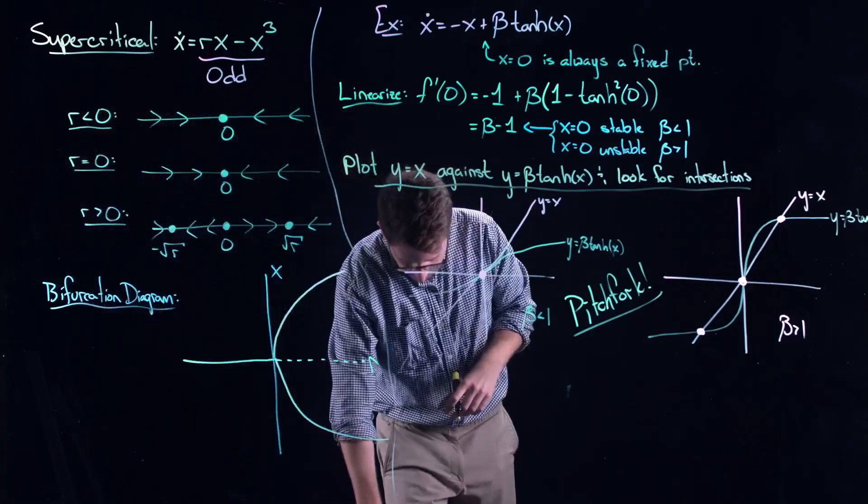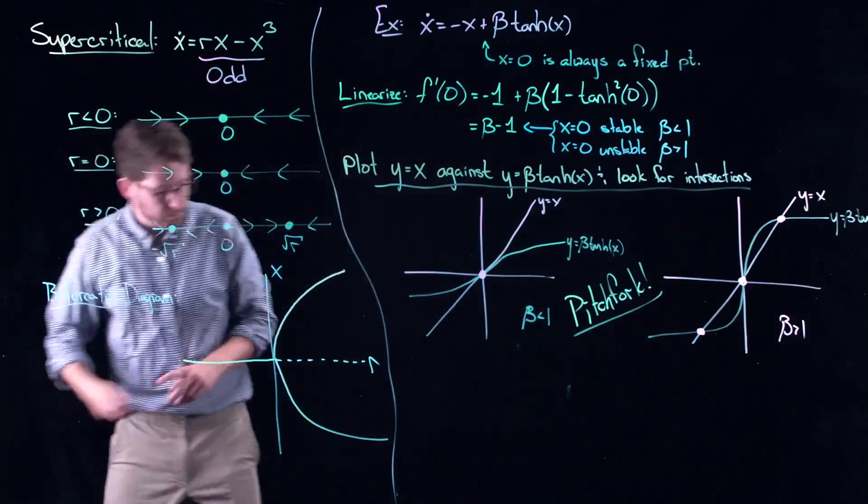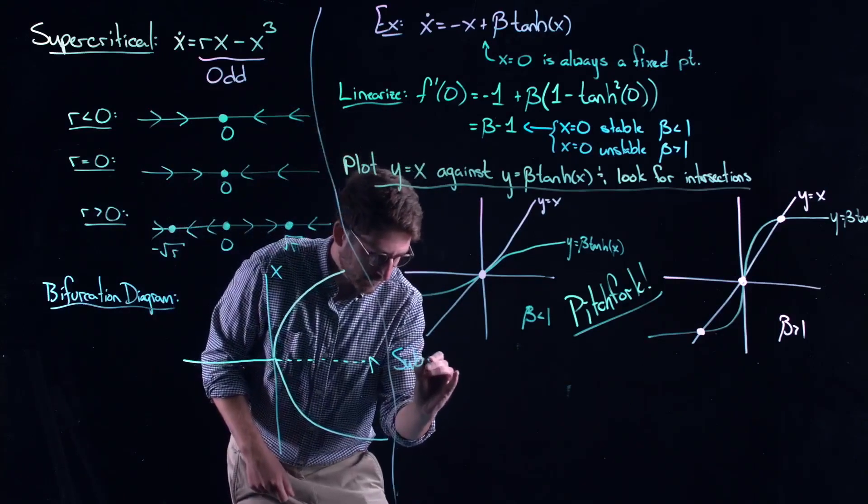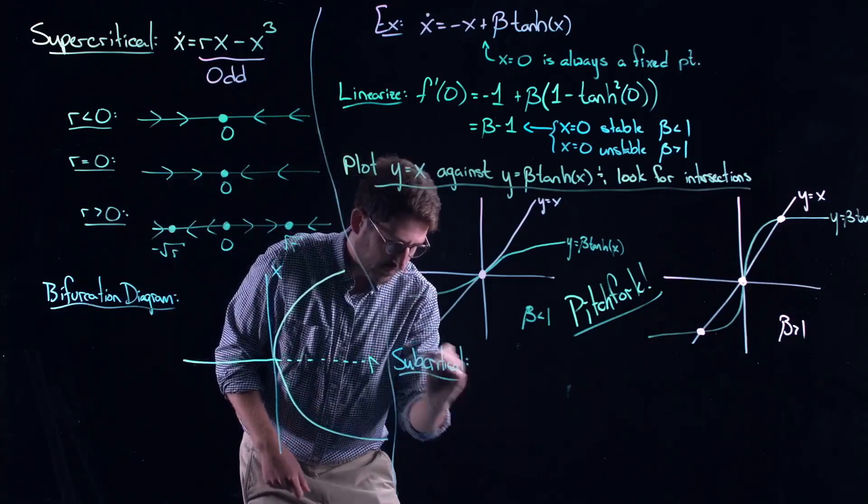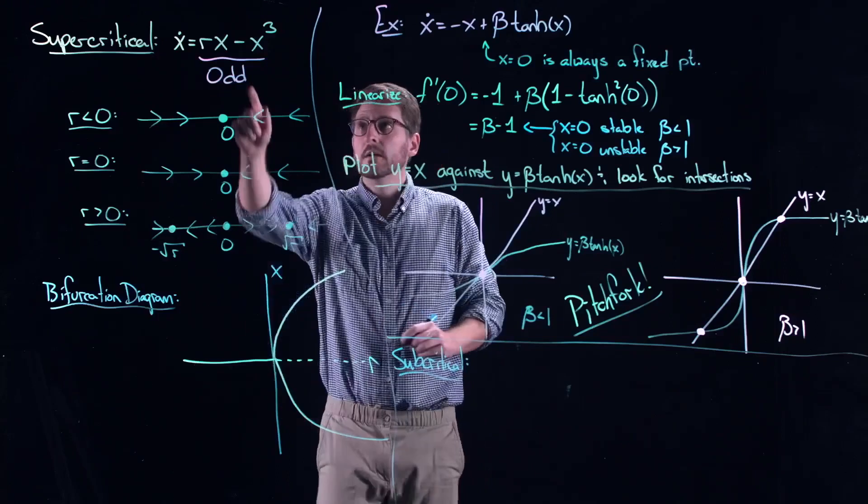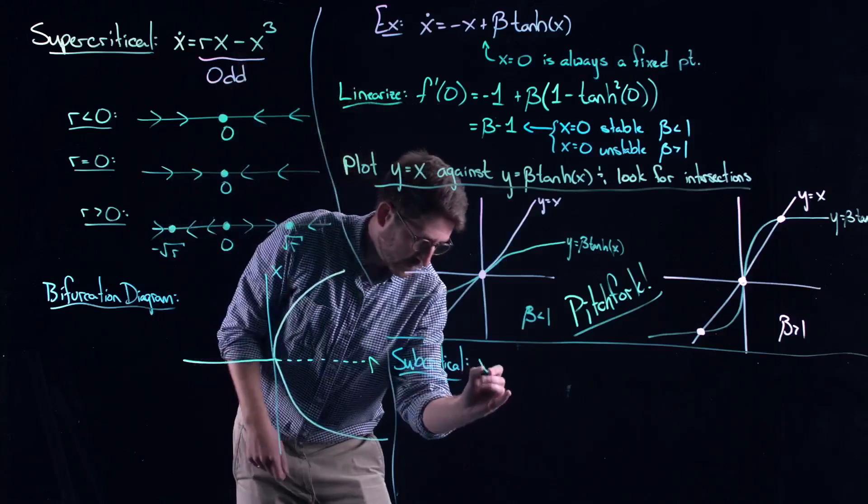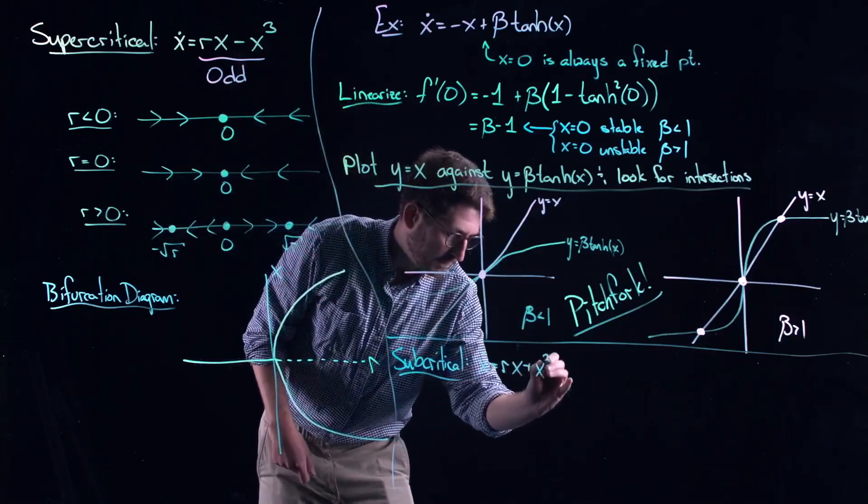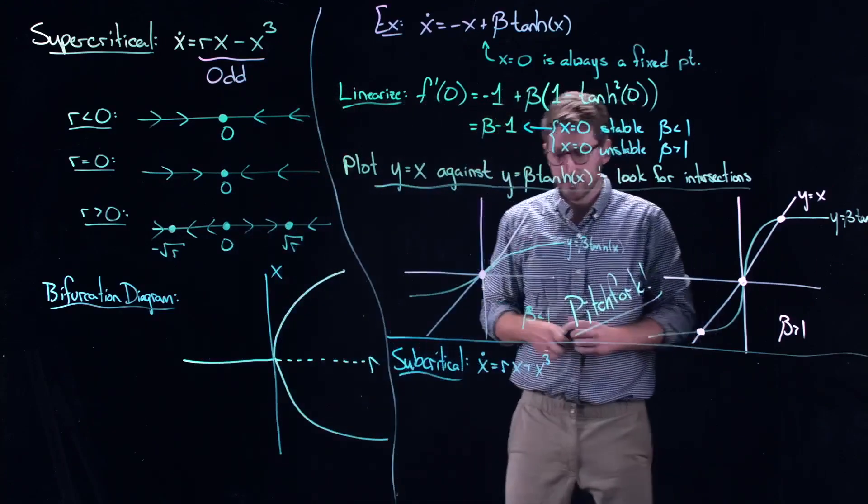Now, there is another type of bifurcation associated or that falls under the pitchfork name and it is called a subcritical bifurcation. Now, the subcritical bifurcation, the only real difference is changing the sign right here. So, it turns out that this actually makes a big difference.